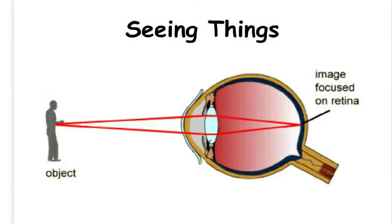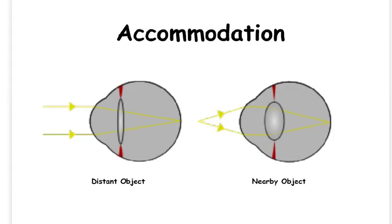In order for us to see things, the light from an object has to be focused onto the retina. The eye has to adjust to see things that are close up or far away. You cannot focus on both close up and far away objects at the same time because the lens has to change shape for near or distant objects. This is known as accommodation.